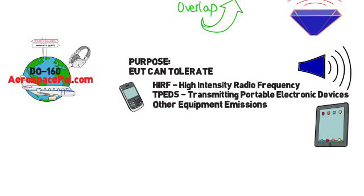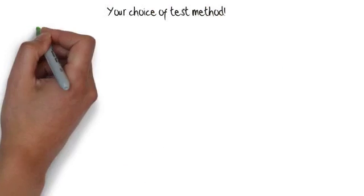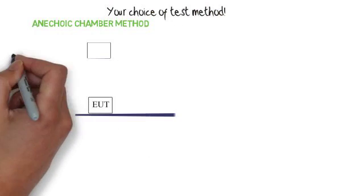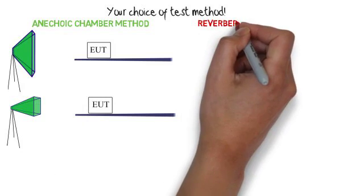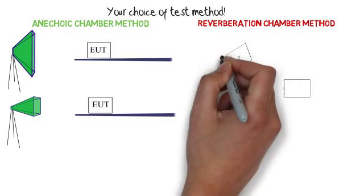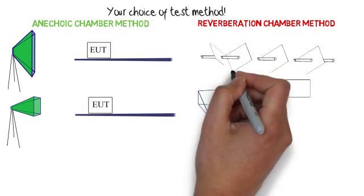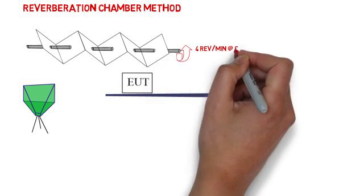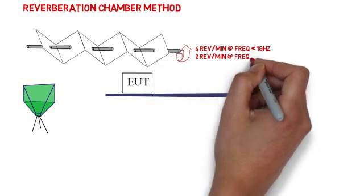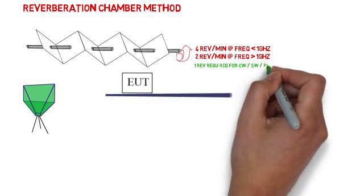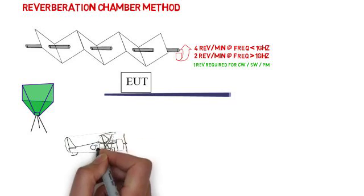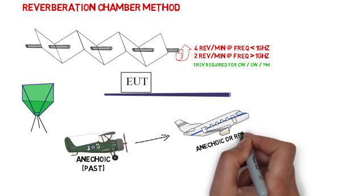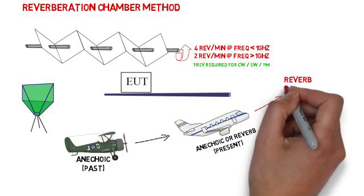Before we get into categories, we need to talk about the two different methods for testing radiated susceptibility. The first is the anechoic chamber method, which uses two different antenna polarities — vertical and horizontal — to test your EUT. The second is the reverberation method, or reverb method, which does not have antenna polarities, but rather a stirring stick or paddle used to reflect or bounce radiated energy in all directions. This paddle rotates at four revolutions per minute under one GHz, and two revolutions per minute above one GHz. A full revolution is required for CW, SW, and pulse. I anticipate the reverb method being the certification method of choice in the future, so if you're qualifying a product today and anticipate qualifying by similarity in the future, consider using the reverberation method.